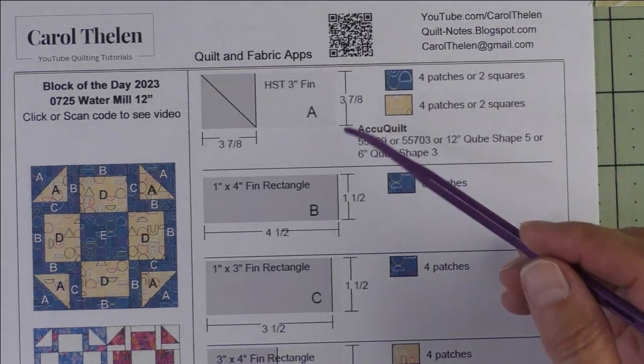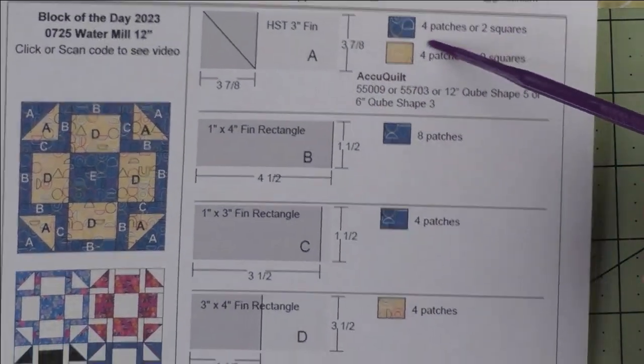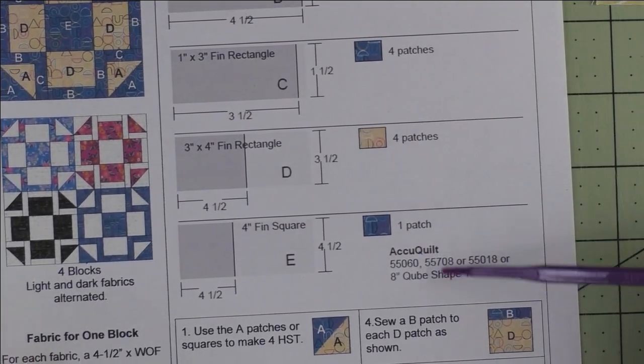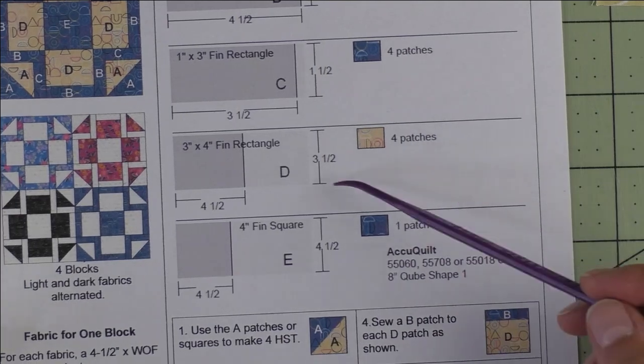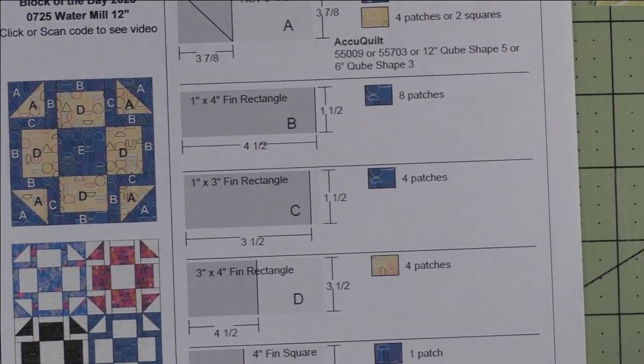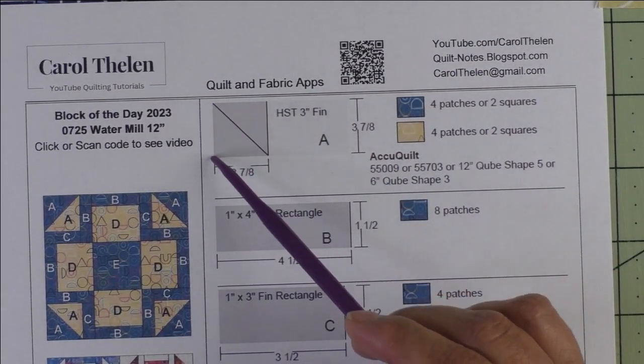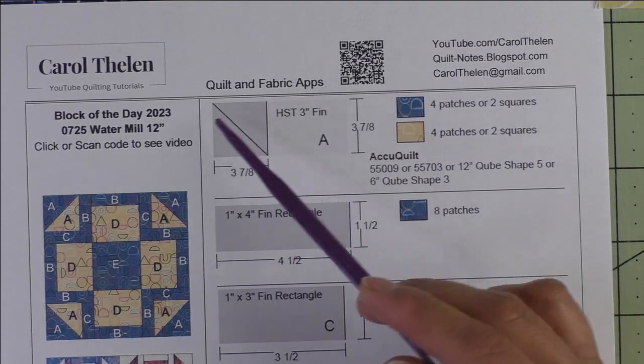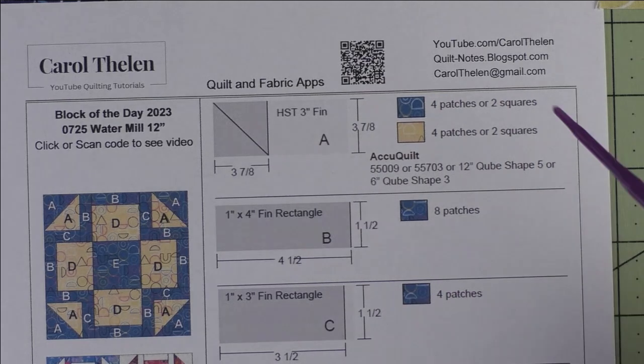The patches are listed here and we only have two of the patches with AccuQuilt dies that will work because these are some different, non-standard sizes of patches. Patch A is a three inch finished half square triangle. We cut three and seven eighth inch squares, cut them in half diagonally once for two patches.